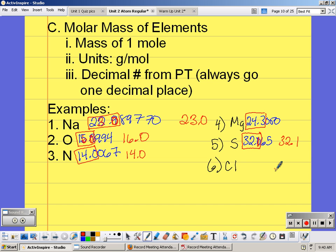And for chlorine, we have 35.453. So 35.4. The 5 is going to round the 4 up, so it's 35.5 grams per mole.